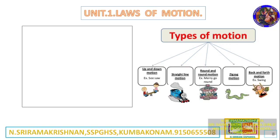Types of motion include: up and down motion, straight line motion (example: train), round and round motion, zig-zag motion, back and forth motion, and to and fro motion — also called oscillation. An example of oscillation is a swing.